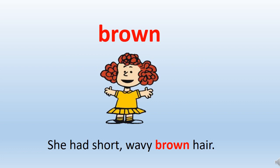The first word is brown. Now children, brown is a color that you all know, right? So we can make a sentence like: she had short wavy brown hair. You can see in the picture the girl is having brown color hair.